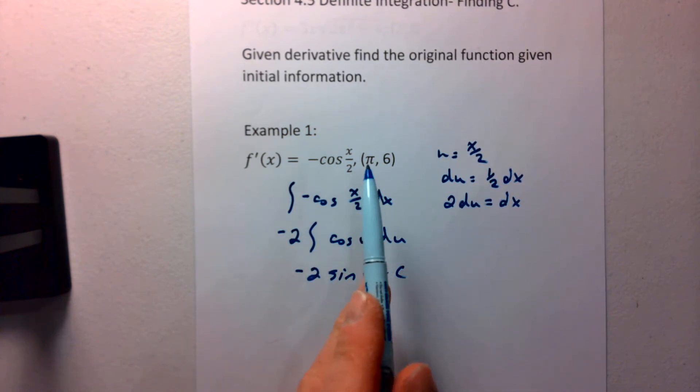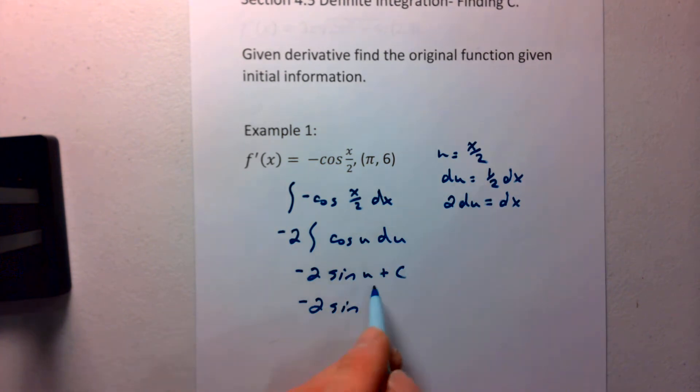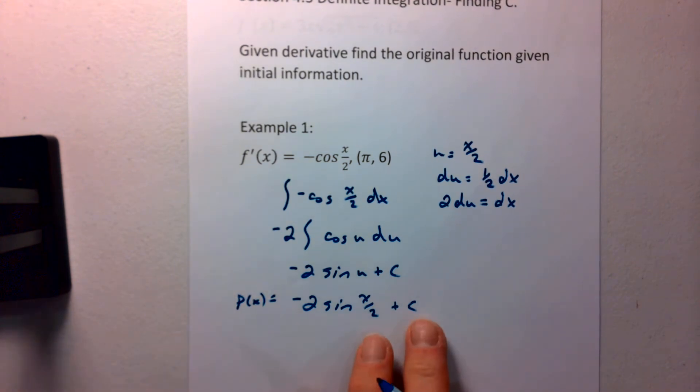Now we have to be very careful because these are in x, y form. These are talking about x's, not u's. So we're going to make sure that we replace that u with x over 2. And that's our original function there. But we have this plus c here.